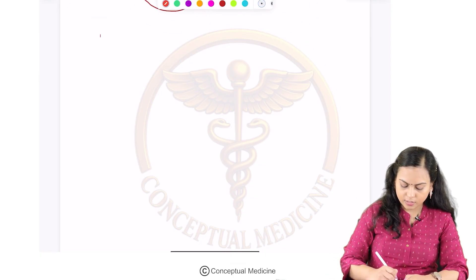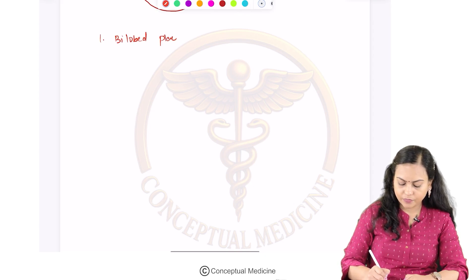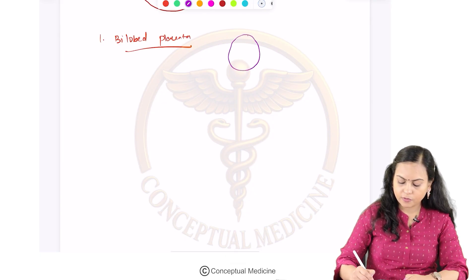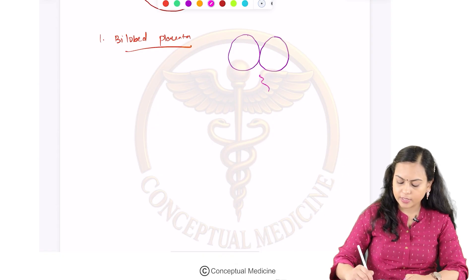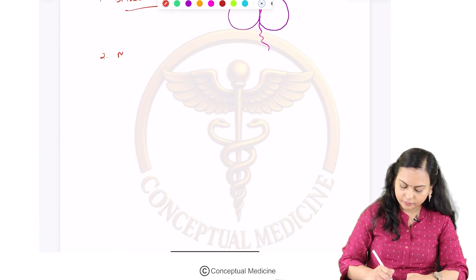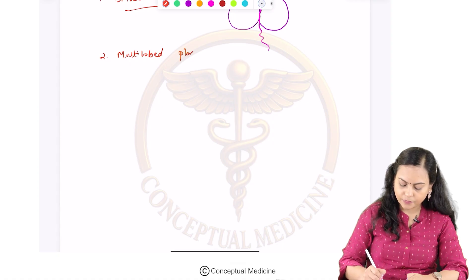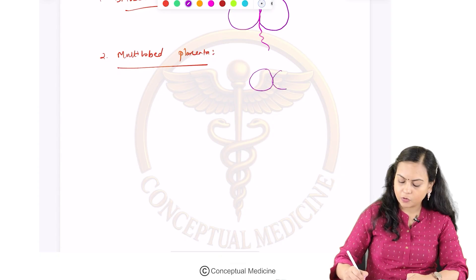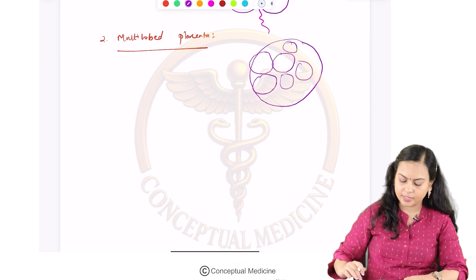Some of the variants include bilobed placenta, where we have two lobes of placenta of equal size and the cord is going to insert somewhere in the center. The second variant is a multilobed placenta where there can be multiple lobes seen in the entire placenta.